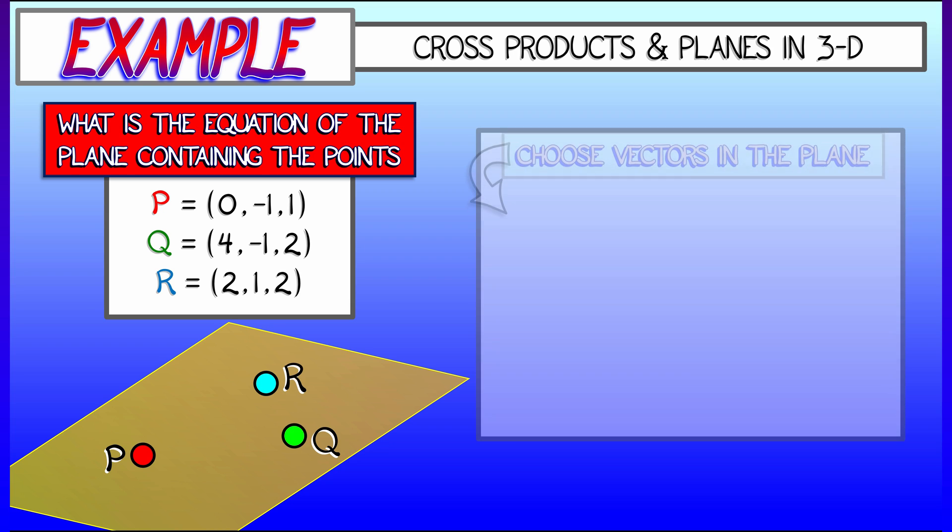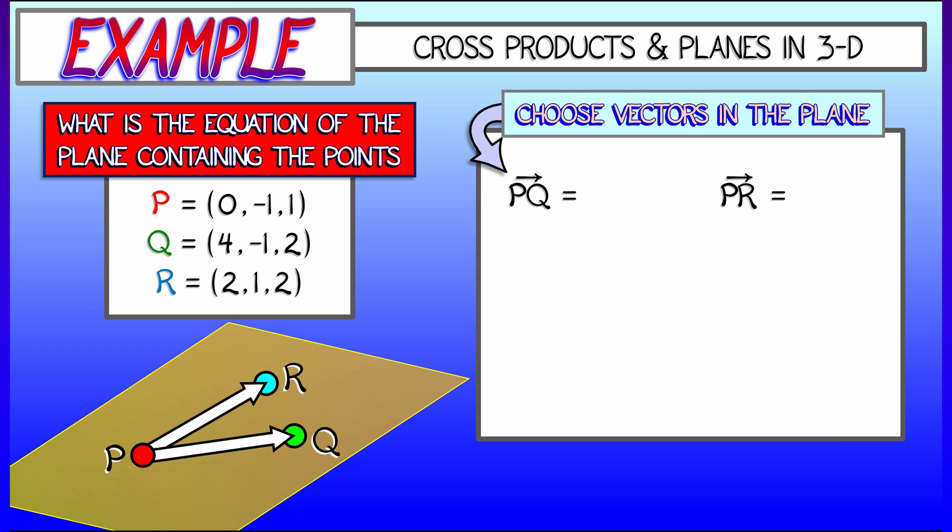One simple way to solve this equation would be to pick one of the points, let's say P, and look at the vectors PQ and PR. We can obtain those through subtraction. PQ is (4, 0, 1), PR is (2, 2, 1).